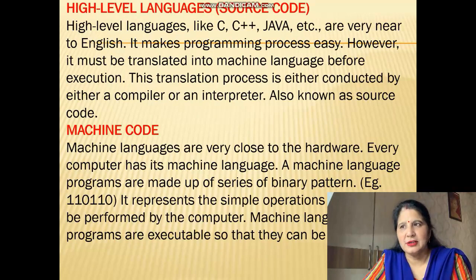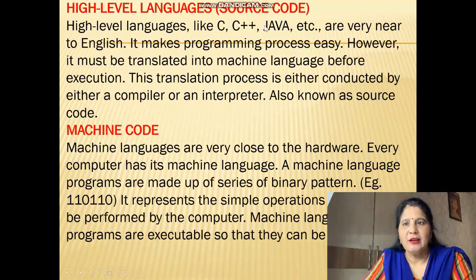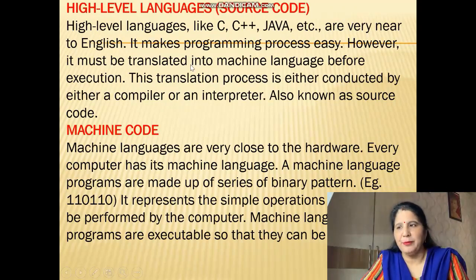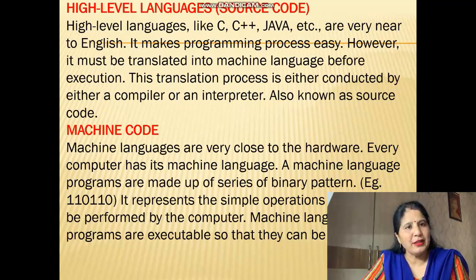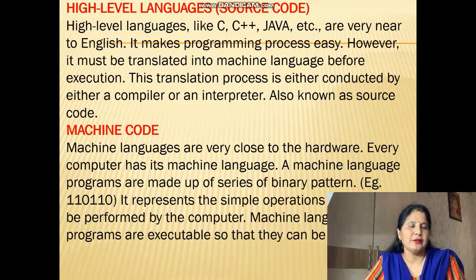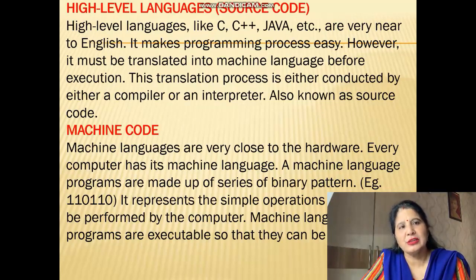Now, high level language and source code: the code which is written in high level language is known as source code. High level languages like C, C++, Java, etc., are very near to English, which makes the programming process easy. However, the code must be translated into machine language before execution — execution means running the program. This translation process is conducted by either a compiler or an interpreter. So codes written in readable form are known as source code, and the high level language code is also known as source code.